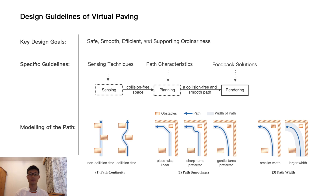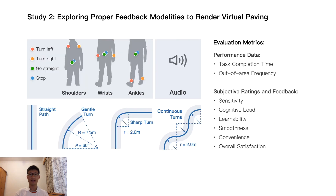We also distilled three path characteristics that affect the walking experience. Next, to find a user-friendly feedback modality to render Virtual Paving, we conducted a co-design study with visually impaired people and identified four promising feedback modalities. We tested the four modalities in navigational tasks with four basic path types: straight paths, gentle turns, sharp turns, and continuous turns.